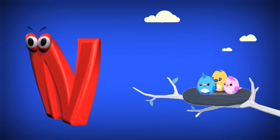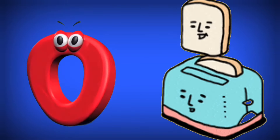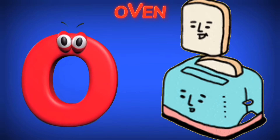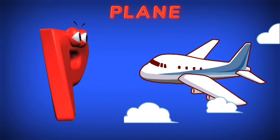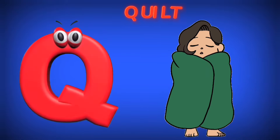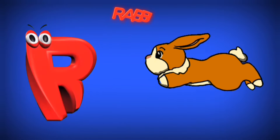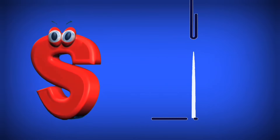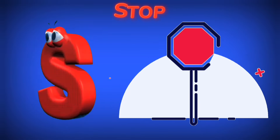N is for Nest. N, N. Nest. O is for Oven. O, O. Oven. P is for Plain. P, P. Plain. Q is for Quilt. Qu, Qu. Quilt. R is for Rabbit. R, R. Rabbit. S is for Stop. S, S. Stop.